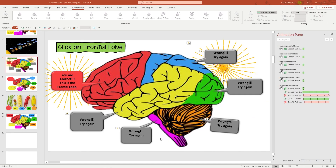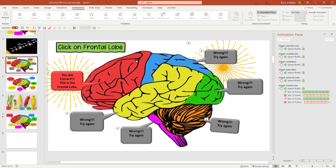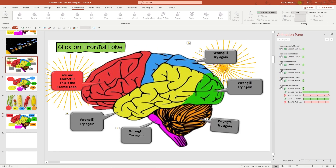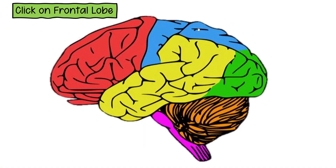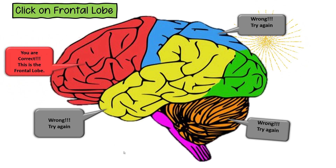It works perfectly. Now let's go ahead and see a variation. Instead of giving the names to your lobes, what you can do is create a quiz for your students and ask them to click on the frontal lobe. So the rest of these will be wrong answers — only the frontal lobe will be the right answer. All you have to do is change the colors and instead of naming the parts of the brain, you can simply say wrong answer, wrong answer, wrong answer — and only the frontal lobe would be the right answer. So when clicking on the blue part, it's the wrong answer; clicking on the frontal lobe gives the right answer. That's another variation.